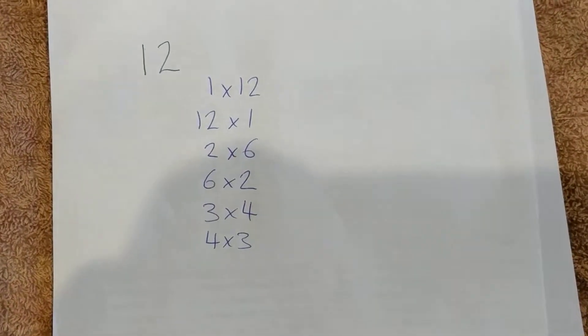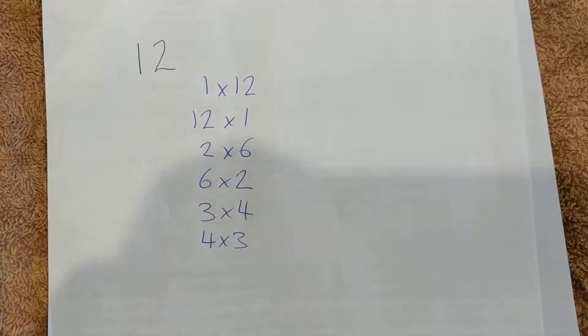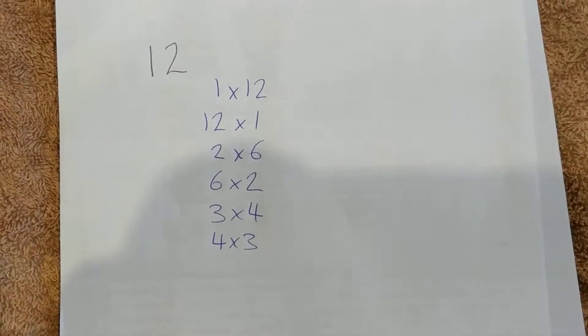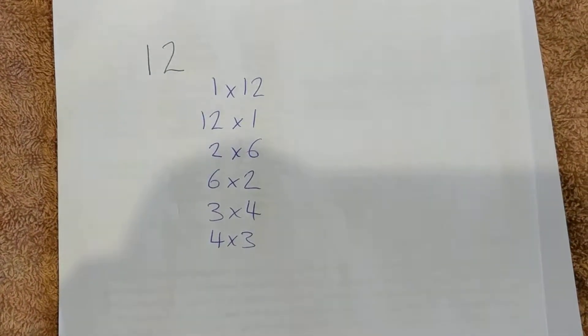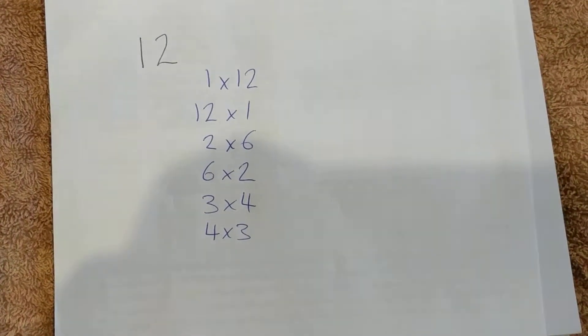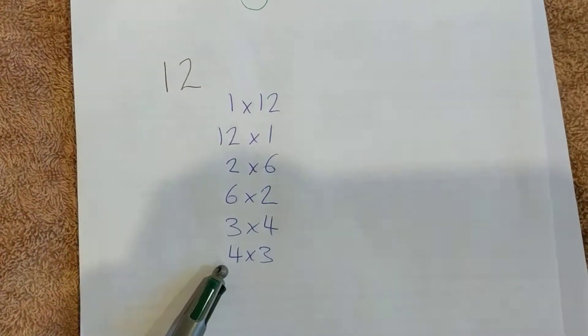And when we get to 5, it doesn't go in there evenly. We've already covered 6, and now we're over halfway. 6 is half of 12, so we know now that 7, 8, 9, 10, and 11 are not factors of 12. So we've found 6 factors.